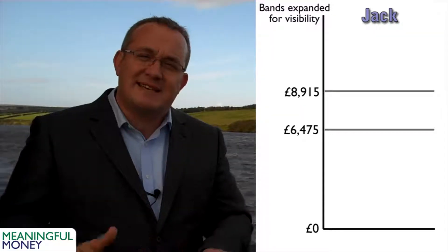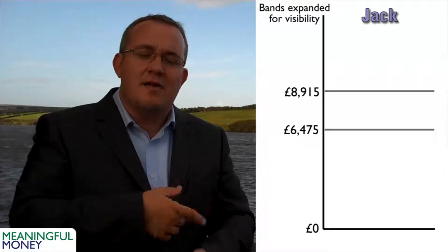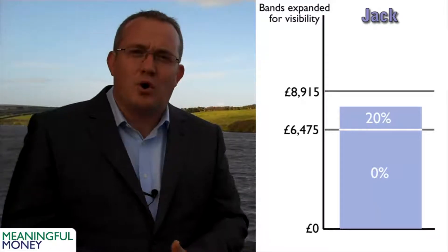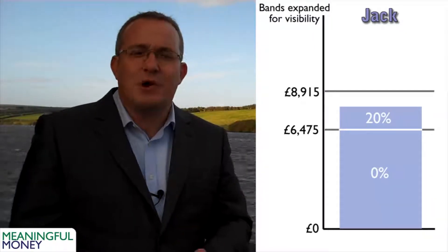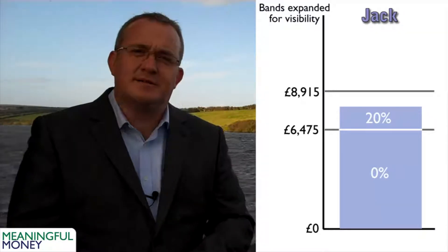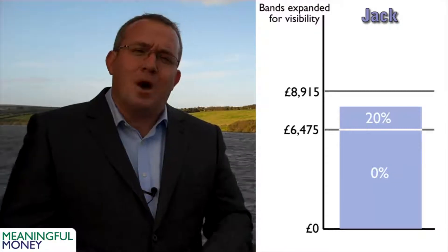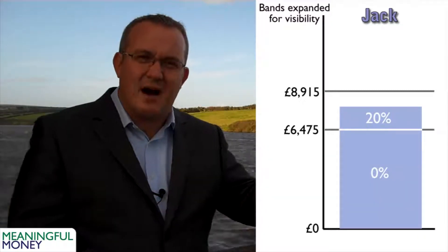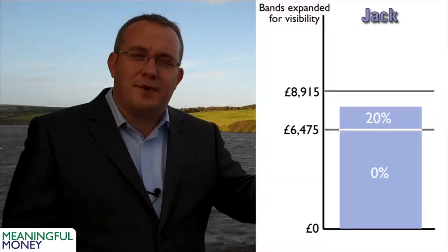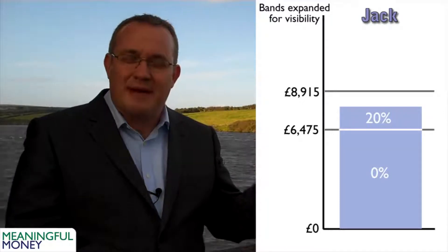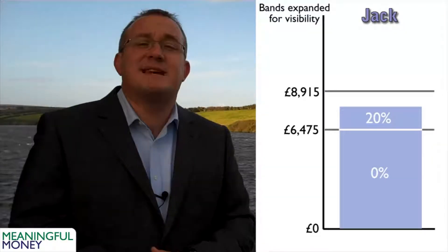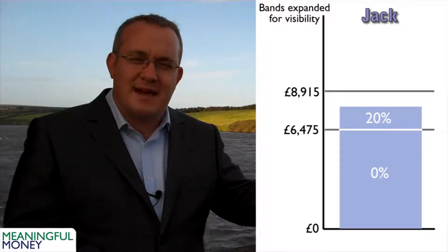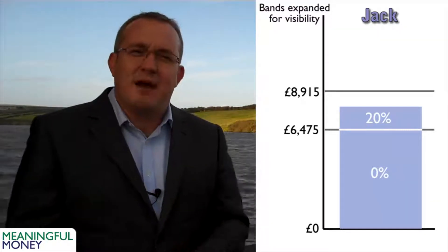Income is taxed in order - it starts with your earnings. We apply the earnings first, then interest, then dividends. So let's put Jack's earnings of £8,500 on the ladder. The first £6,475 of his earnings falls into the personal allowance and is therefore tax-free - nil percent. On top of that, up to the total of £8,500, the rest falls into the next band. But remember, that starter rate band only applies to interest, not to earnings, so the top bit of his income is taxed at 20% - it falls into the basic rate band.